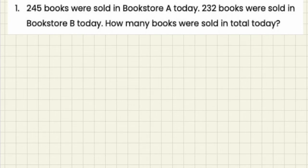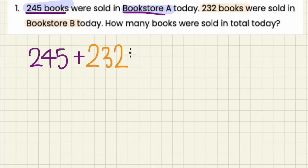Here's our question. Let's read it out together. 245 books were sold in Bookstore A today. 232 books were sold in Bookstore B today. How many books were sold in total today? First, we have to determine what the question is asking. So the question is asking, how many books were sold in total today? And that means we have to add the number of books sold in Bookstore A and the number of books sold in Bookstore B.